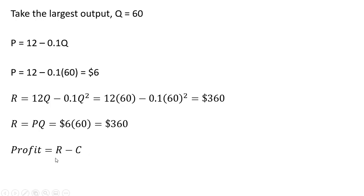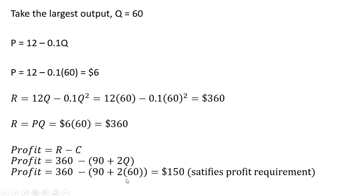And profit is revenue minus cost. So our revenue is 360 minus our cost, when we're producing 60 units, is $150, which satisfies the minimum profit requirement.